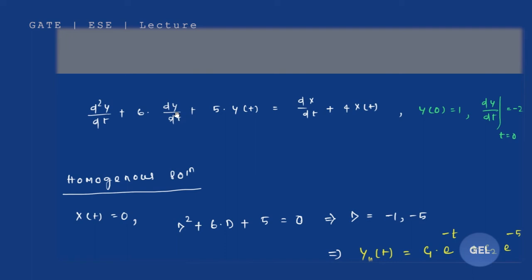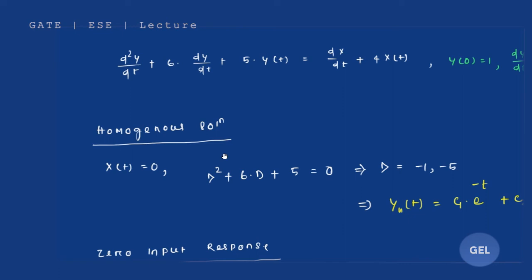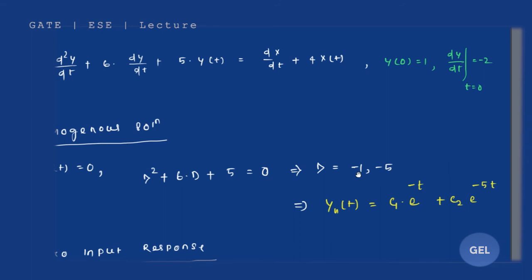The question can also be represented in operator form. To find the homogeneous solution — as studied in first-semester mathematics — we set the input to zero. With x(t) = 0, the differential equation becomes D² + 6D + 5 = 0, which gives roots D = -1 and D = -5. So the homogeneous solution is y_h(t) = c1·e^(-t) + c2·e^(-5t).